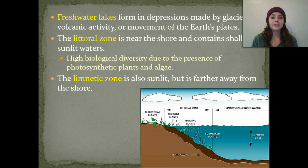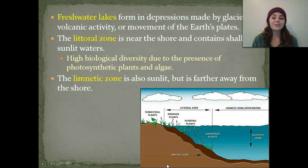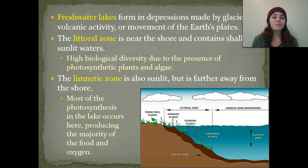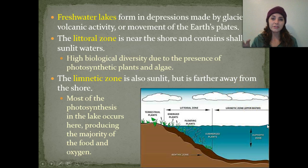We also have the limnetic zone. This is also sunlit, but it's a little bit further out from the shore — our open water. Most of the photosynthesis in the lake occurs here in the limnetic zone, and the majority of the food and oxygen in the lake is also produced here. Again, we're going to have photosynthesis going on in the top layers that the sun can penetrate.